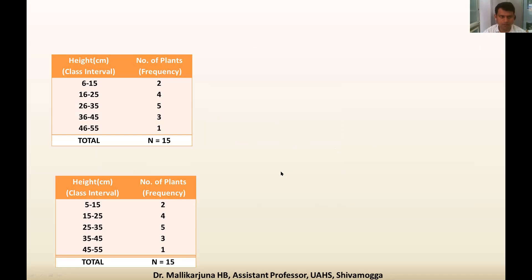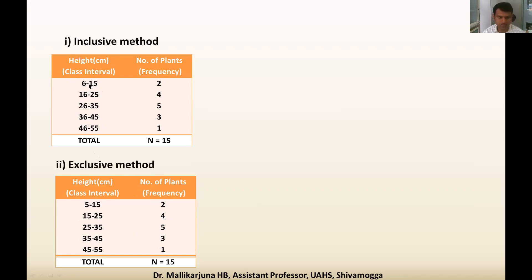Now consider another type of example. Instead of individual observations, we use class intervals with their frequencies. There are two types: the first is the inclusive method and the second is the exclusive method — there are some differences between them. For convenience I have taken the same frequencies. The classes are: 6 to 15, 16 to 25, and so on; here also 5 to 15 is a class, and so on.